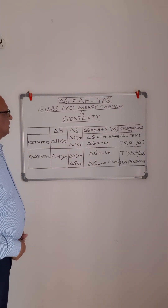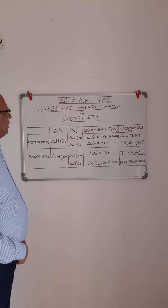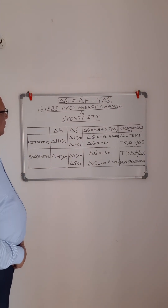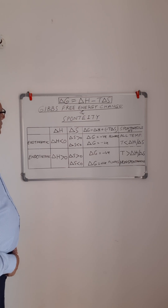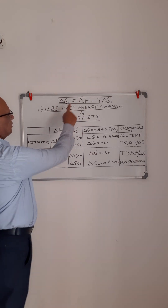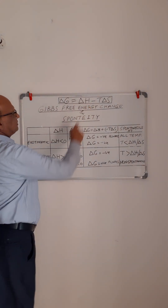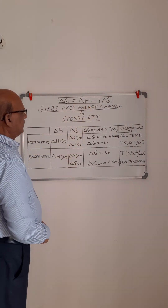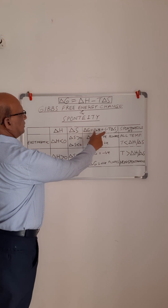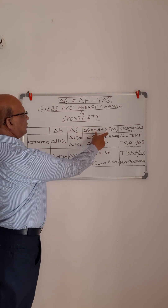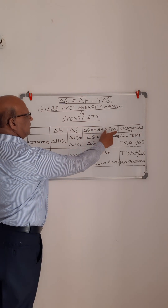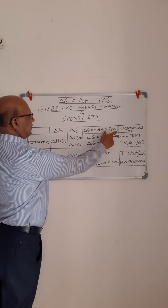Gibbs free energy change and spontaneity of a chemical reaction. Gibbs free energy change is given by delta G equal to delta H minus T delta S. This can be expressed as the summation of two terms: delta H and minus T delta S.